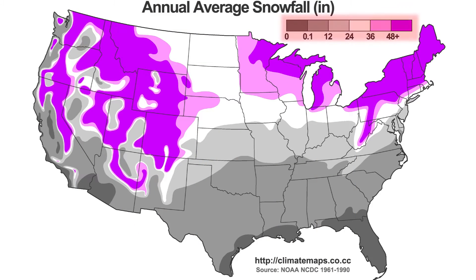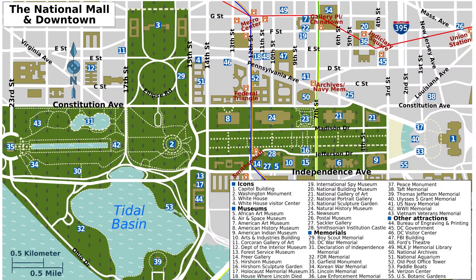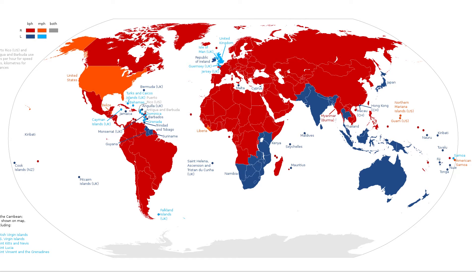The legend, or key, explains the symbols used on a map. What does this color represent according to the key on this map? It means that this area receives between 0 and 0.1 inches of snowfall each year – no snow days. And what about this symbol? That identifies the Washington Monument as an iconic site and shows its location. A map's key unlocks some really cool potential for showing all sorts of interesting things about different locations, like which side of the road people drive on around the world and whether they measure distance and speed using miles or kilometers.